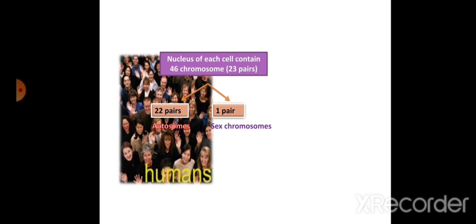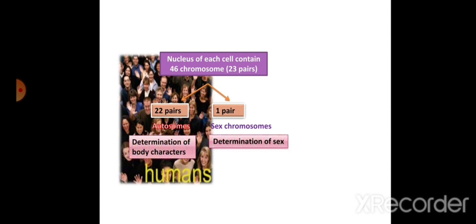Autosomes do not play any role in the determination of the sex of an organism, whereas sex chromosomes do — XX makes an organism female and XY makes an organism male. If autosomic genes, which control somatic characters, get transferred onto the sex chromosome by mutation, that is called sex-linked inheritance.